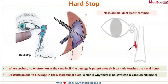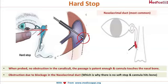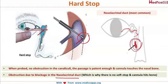For a hard stop, the probe passes freely through the canaliculi with no obstruction and hits the nasal bone. This means the canaliculi are patent and the obstruction is in the nasolacrimal duct itself. The probe travels through the canaliculi, hits the nasal bone, and that hard stop indicates nasolacrimal duct blockage.